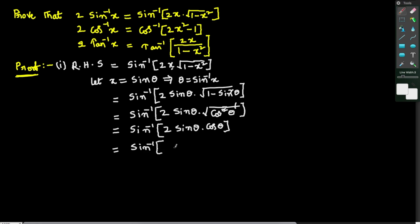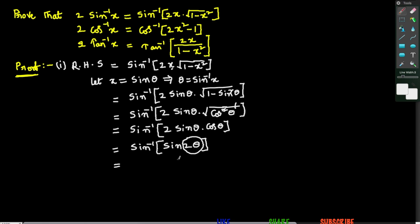From the trigonometry chapter we know the formula sin 2θ = 2 sin θ · cos θ. So in place of 2 sin θ · cos θ we write sin 2θ, giving sin⁻¹(sin 2θ). Now we use the property sin⁻¹(sin θ) = θ, so sin⁻¹(sin 2θ) = 2θ.